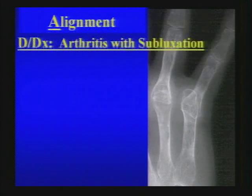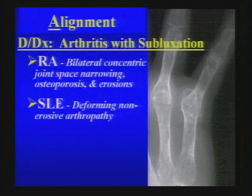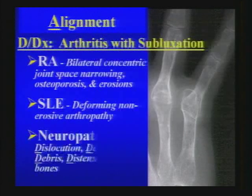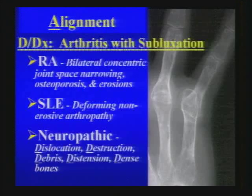In this case, alignment is the key issue. The differential diagnosis for arthritis with subluxation includes not only RA, as present here, but also lupus — a deforming, non-erosive arthropathy — and neuropathic osteoarthropathy, which can also cause subluxation or dislocation in joints.